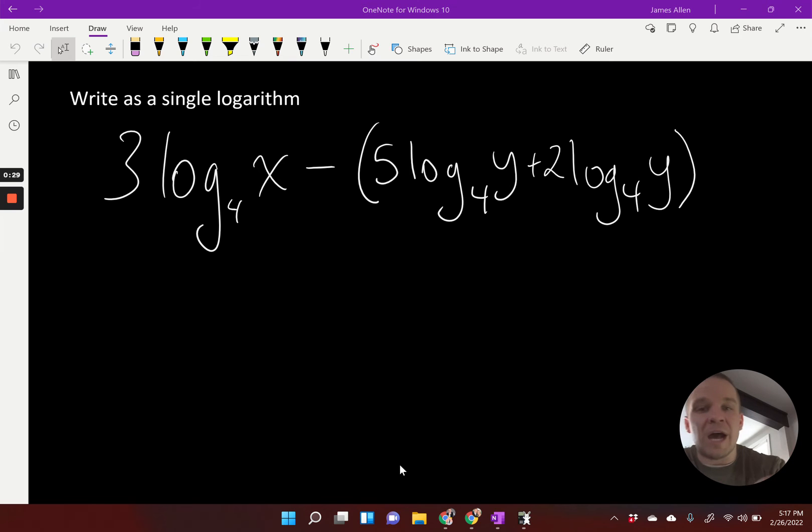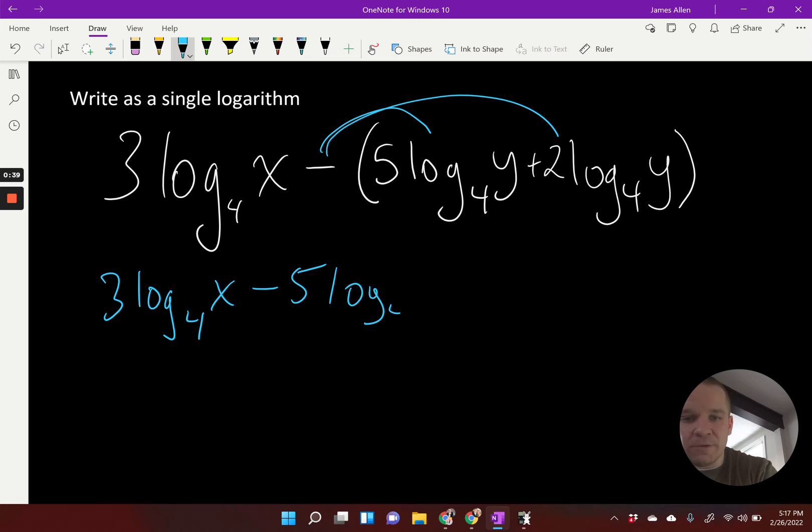So first things first, I'm going to go ahead and distribute this negative. I think that's going to be most helpful. So I have 3 log base 4 of x minus 5 log base 4 of y minus 2 log base 4 of y. Now I've got my negatives all taken care of, and I can think about how this is all going to come together.